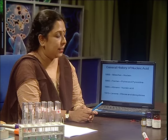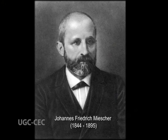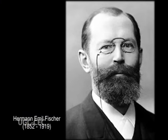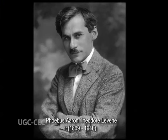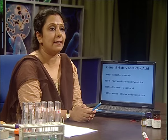In 1868, Miescher found the presence of nucleic acid in the pus cell bandage, but he named it as Nuclein. After that, in 1880, Fischer found the presence of purine and pyrimidine bases inside the nucleic acid. In 1889, Altman coined the term nucleic acid instead of nuclein. In 1910, Levine found the presence of deoxyribose as well as ribose sugar as components of DNA and RNA.